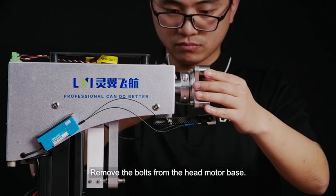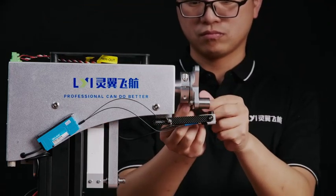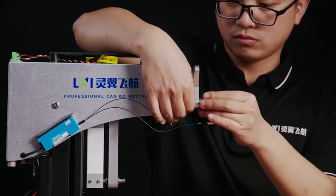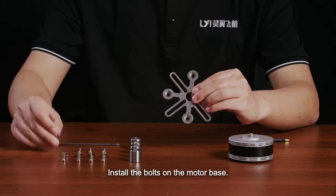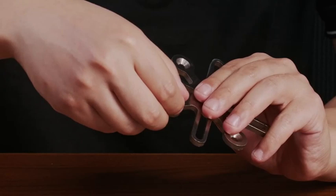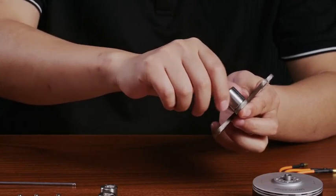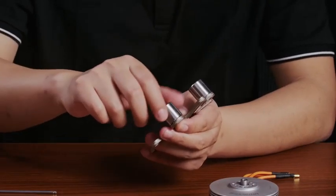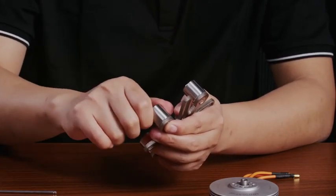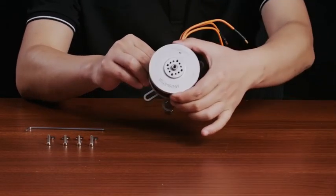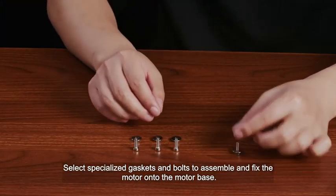Remove the bolts from the head motor base. Install the bolts on the motor base. Select specialized gaskets and bolts to assemble and fix the motor onto the motor base.